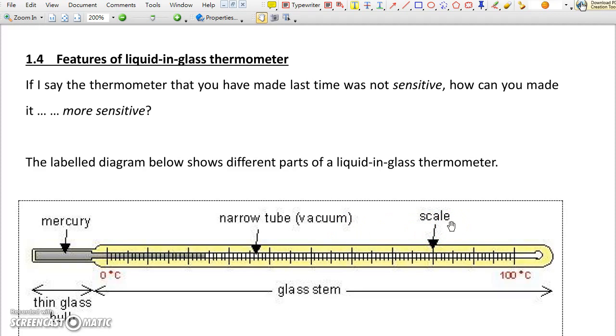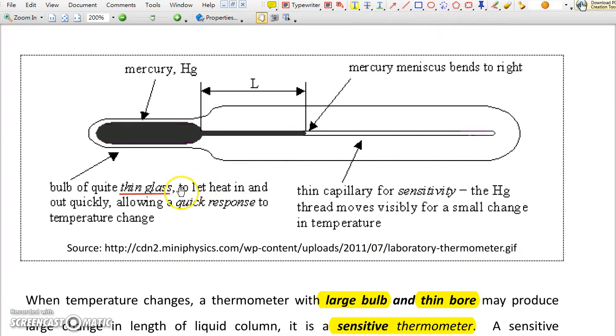When temperature increases, the mercury absorbs the energy, and then it expands, and then the mercury column becomes longer and so the temperature reading increases with temperature. The bulb should have thin glass wall so that heat can be conducted to the mercury inside easily so as to give quick response to temperature change.